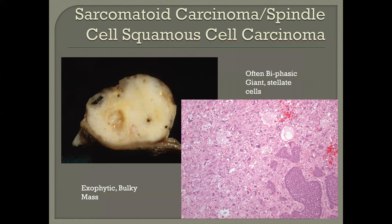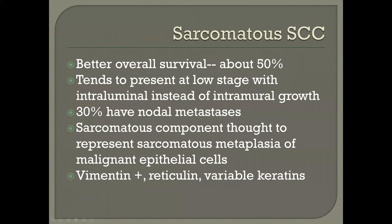Another variant to be aware of is sarcomatoid carcinoma, which has a biphasic appearance. These tend to be rather bulky but largely exophytic, and because of that they actually have a better prognosis than typical squamous cell carcinomas — about a 50% survival rate. They present at lower stage, and only about a third have nodal metastases. If detected early and resected locally, patients can have a fairly good prognosis. They may be positive for both vimentin and keratin staining, and seeing a biphasic or exophytic pattern of growth should prompt one to think of sarcomatoid carcinoma first.